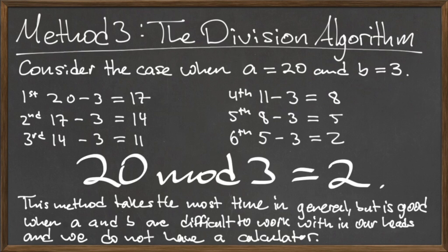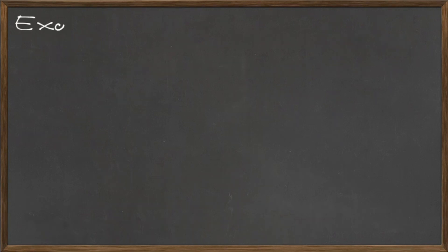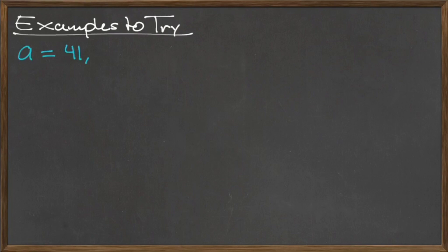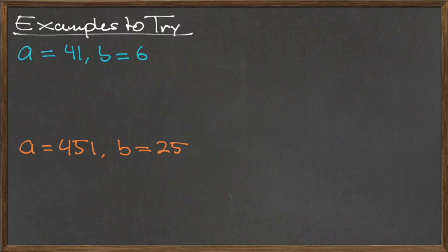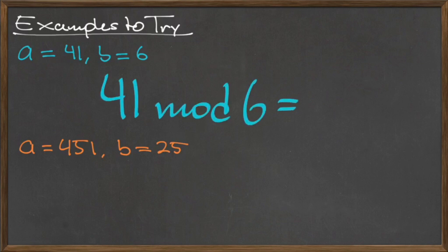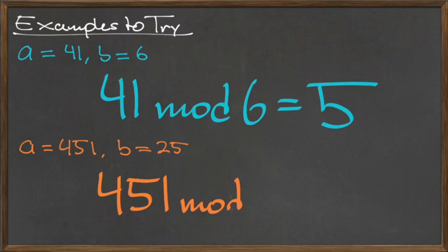For some extra practice, try using the three methods just described to compute a mod b for a equals 41 and b equals 6, and again with a equals 451 and b equals 25. Using the methods above, we find that 41 mod 6 is equal to 5, and 451 mod 25 is equal to 1.